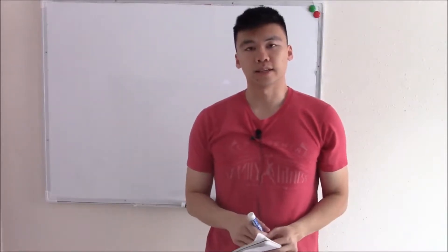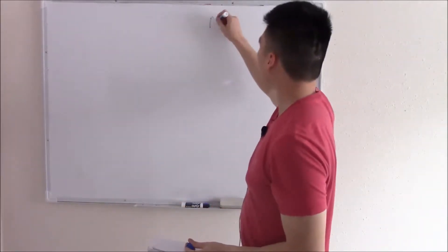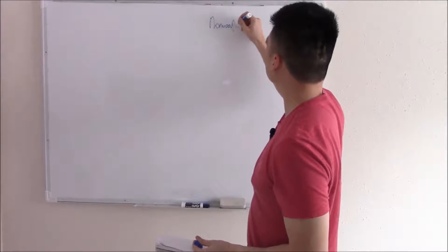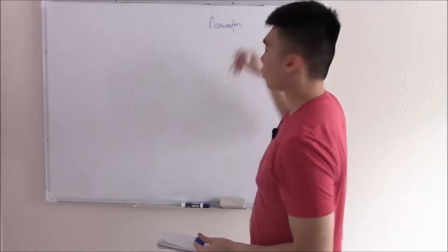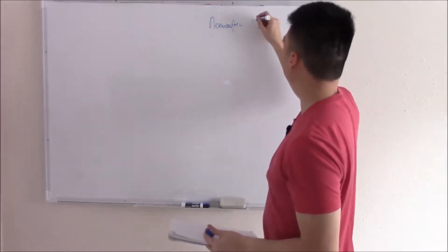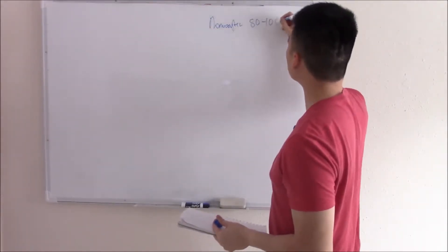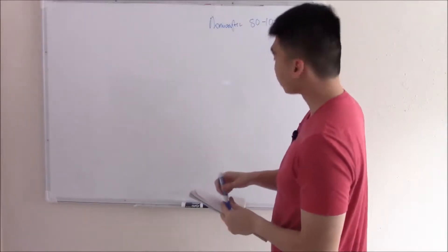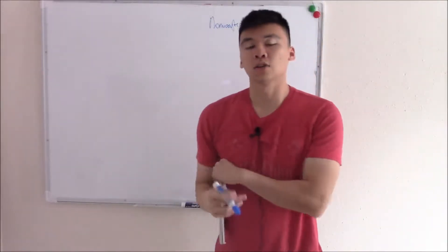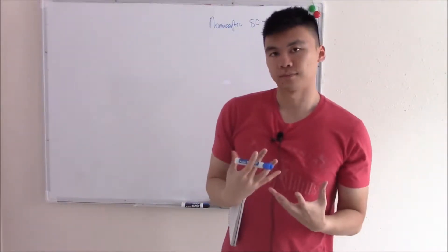This video is on normocytic anemias. Normocytic anemias have an MCV of 80 to 100 — this is normal. So these are normal size red blood cells; you just don't have enough of them.